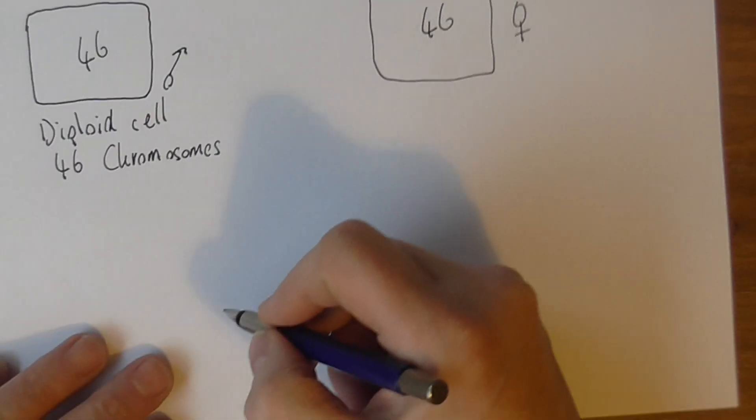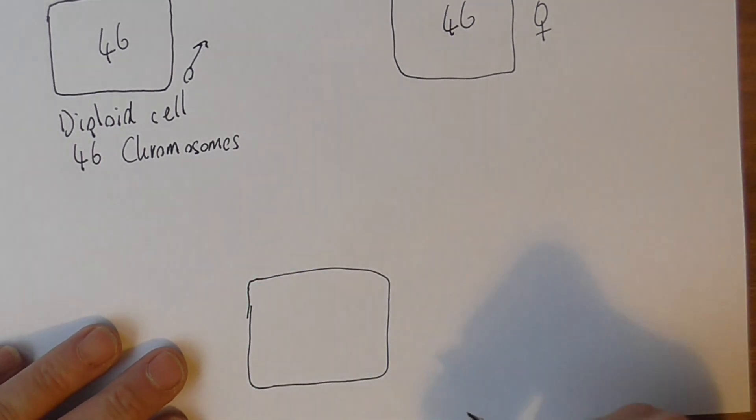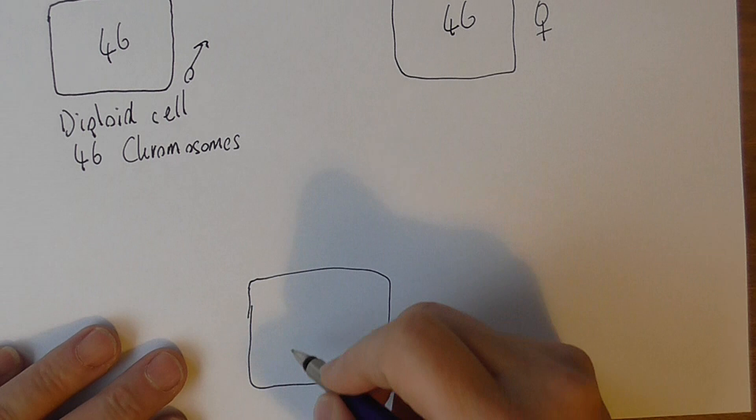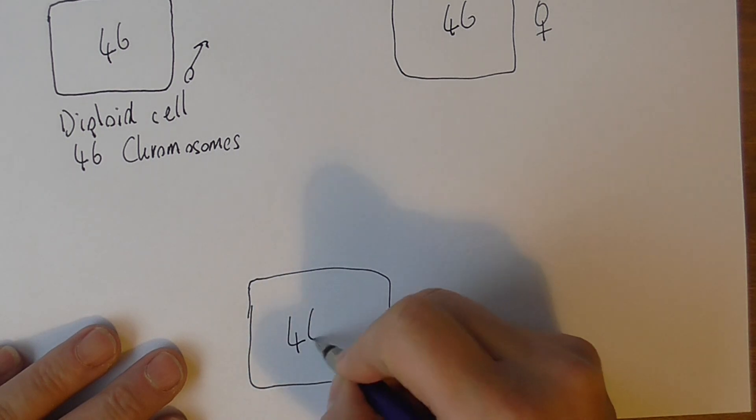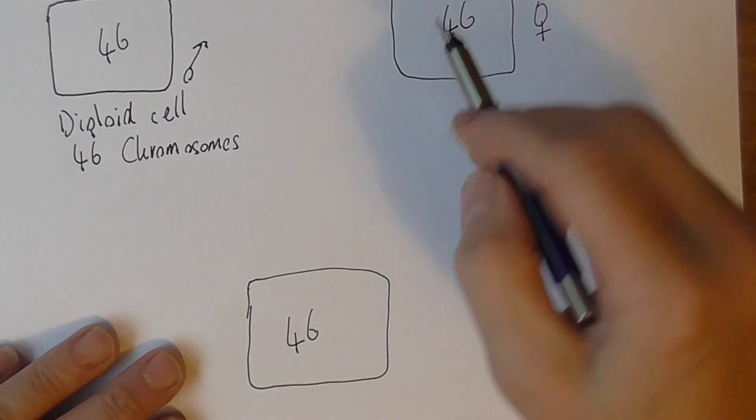And of course what we need to get to eventually is the next generation, and the next generation also needs to have 46 chromosomes, and yet we need to combine chromosomes from here and from here.